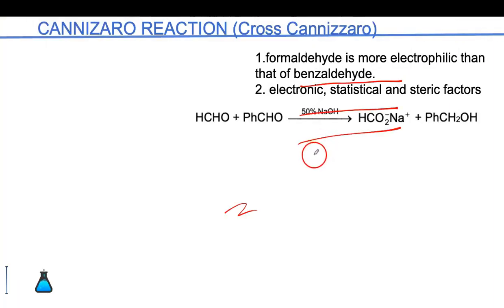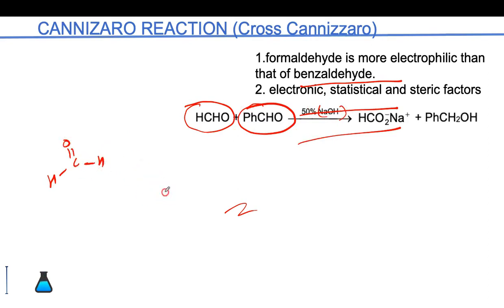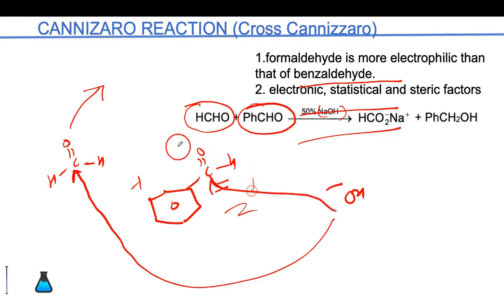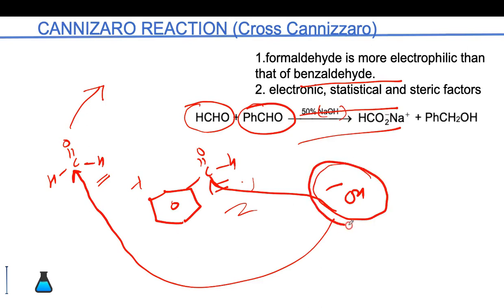Cross Cannizzaro involves two different aldehyde groups treated with NaOH. For example, if we have formaldehyde and benzaldehyde, we must decide which carbon OH minus will attack. If OH minus attacks the benzaldehyde carbon, it gives formic acid and benzyl alcohol; if it attacks formaldehyde, it gives methanol and benzoic acid. Preferably, OH minus will attack the less sterically hindered carbon — so OH minus attacks formaldehyde — giving formic acid and benzyl alcohol. This principle is valid for all such reactions.